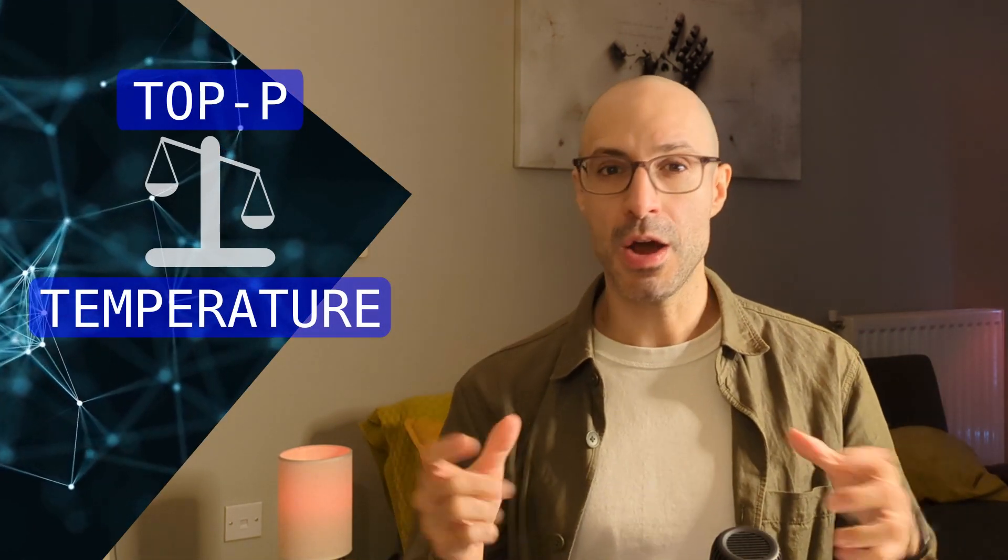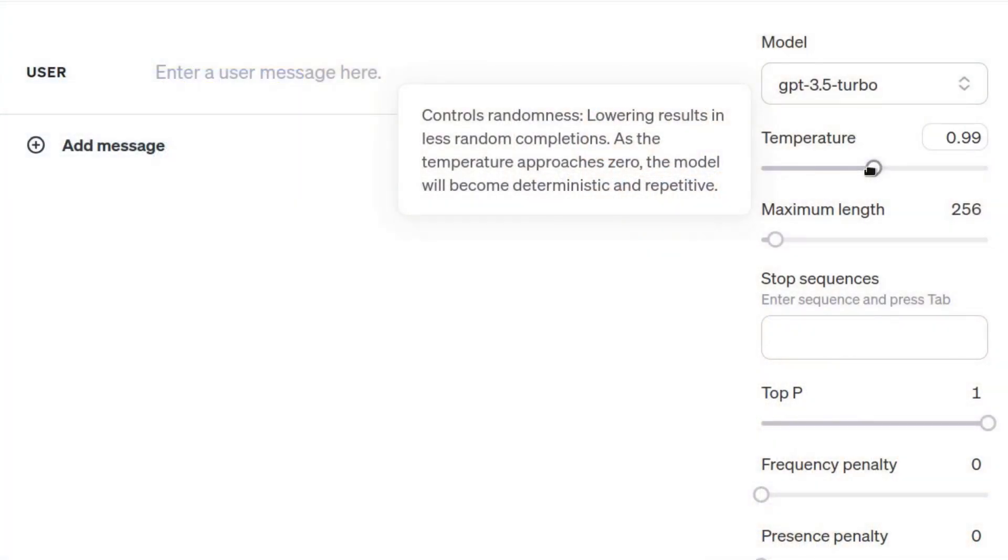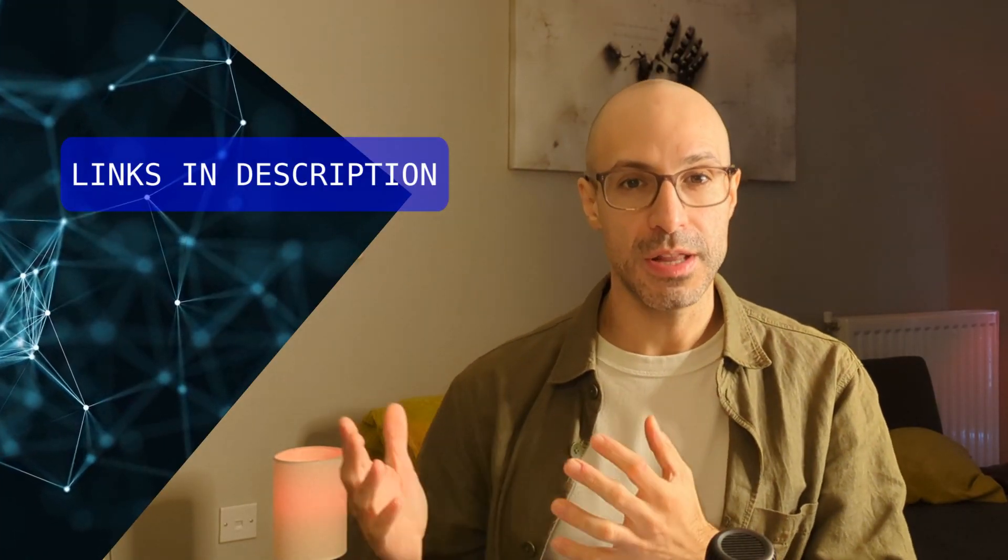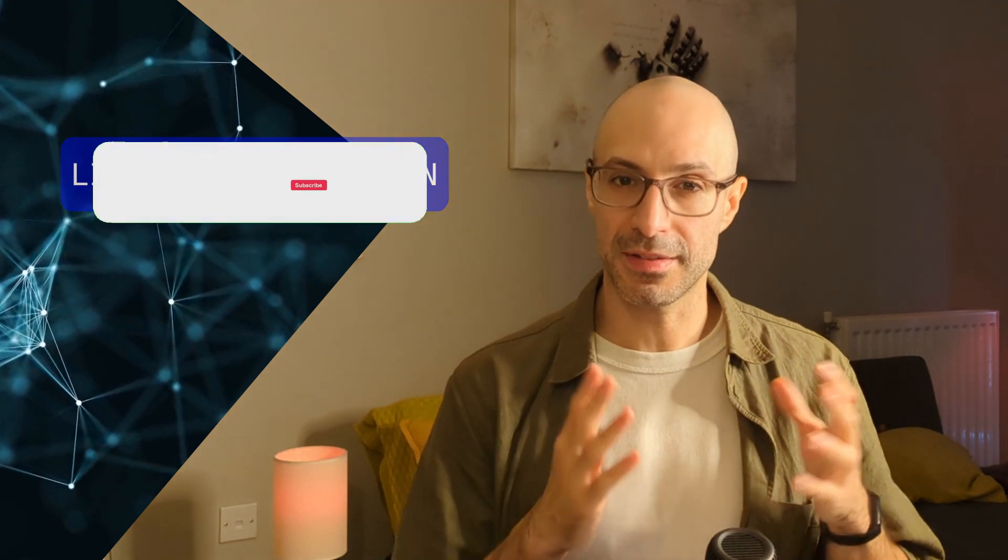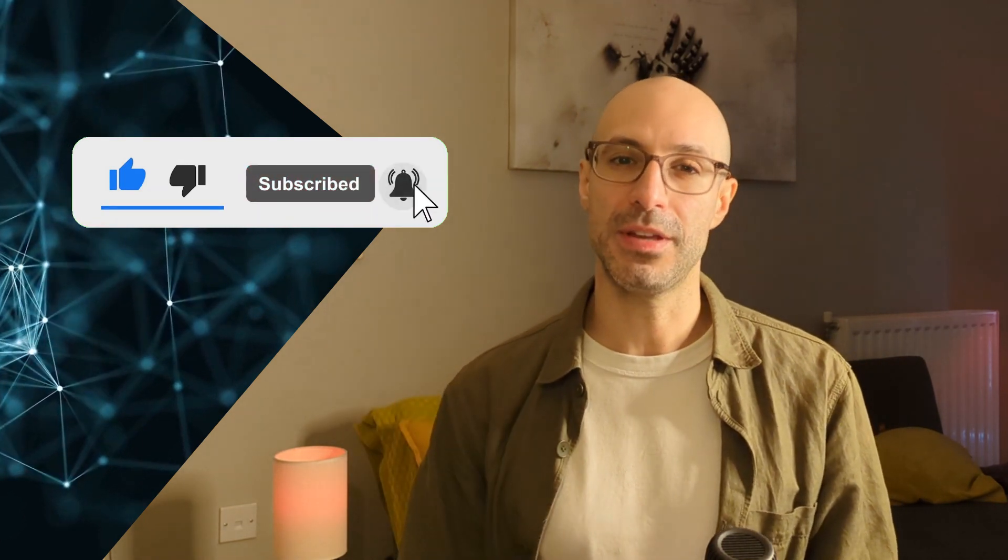By fine-tuning the balance between top-P sampling and temperature, we can get a wide range of outputs from a language model—maybe something more precise and coherent, or something more novel and creative. The next episode is a very exciting one: we'll take everything we've learned, put it together, and train our first language model. Don't forget to check out the description for more information and links to the topics that we discussed in this video, and subscribe to the channel to be notified of the upcoming videos. Thank you very much for watching. See you next time.